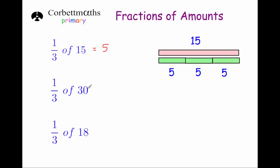A third of 30 is going to be 10, because 30 divided by 3 is 10. And a third of 18 is 6, because 18 divided by 3 is 6. So if you want to work out a half of something, you divide by 2. If you want to work out a third of something, you divide by 3.